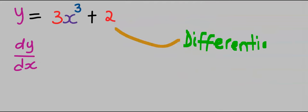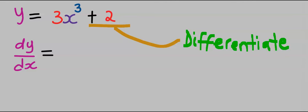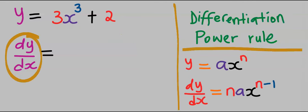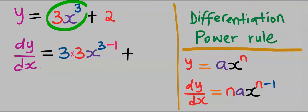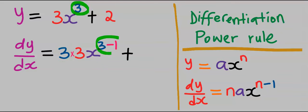To understand why we add C at the end of every integral result, let's differentiate a function. To find dy/dx we are going to apply the differentiation power rule. Next, we differentiate 3x to the power of 3: the 3 at the power will come down and this same 3 will subtract 1.